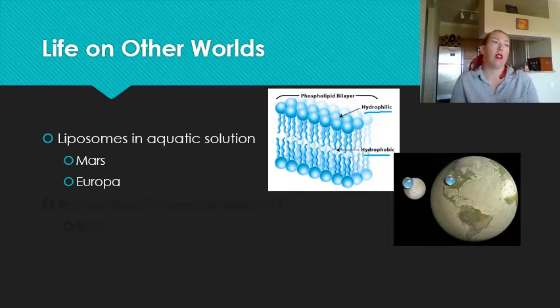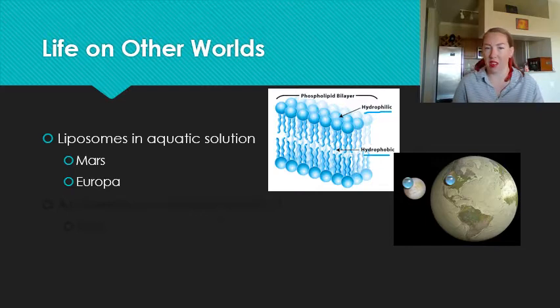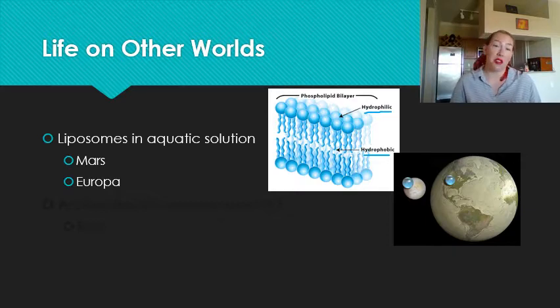They think that this liquid water ocean is warmed by something called tidal flexing in the core of the moon as it orbits around Jupiter. It gets kind of stretched and pulled like putty, which heats up the core, which heats up the liquid water ocean. NASA is actually planning a flyby mission to Europa in a few years, in the 2020s. They said they're going to search for evidence of life in Europa. Who knows what we'll find?